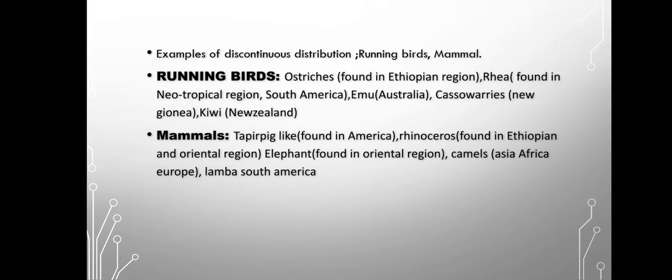If we look at more examples, you can quote the running birds. Among the running birds, there is the ostrich, which is the world's largest bird, found in the Ethiopian region. Then there is the Rhea, present in the Neotropical region. And the Emu, present in Australia — the Emu is the second largest bird in the world.